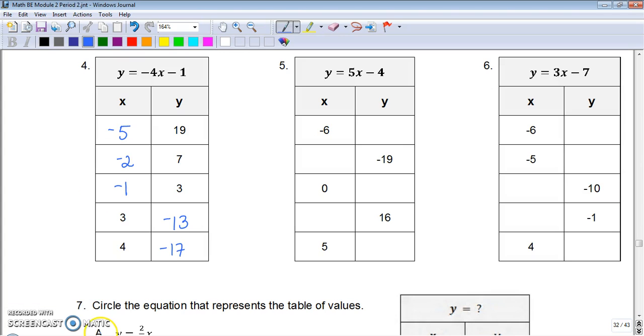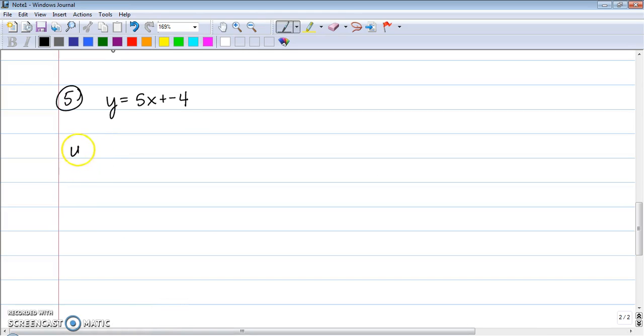So the next one, number 5, is y equals 5x plus negative 4. They start the table with giving us the x value, so we just plug that in. We're going to plug in negative 6 for x, which is negative 30 plus negative 4. You add two negatives, they stay negative. That gives us negative 34.